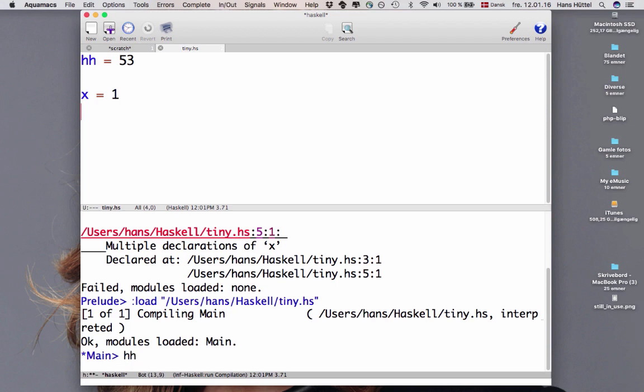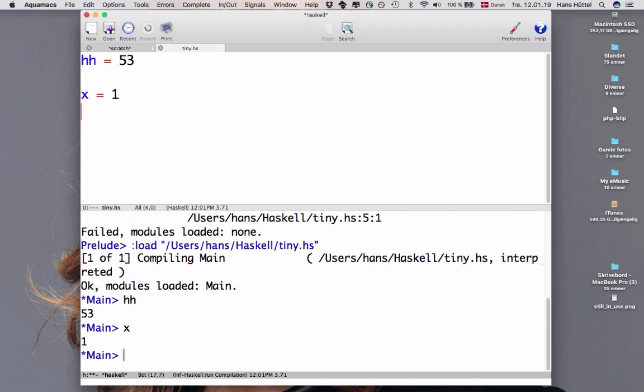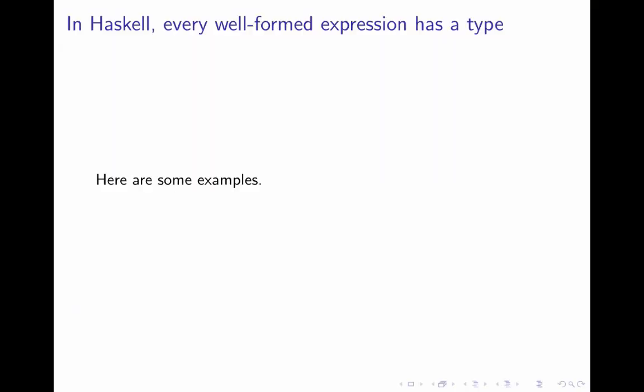What's the value of hh? 53. What's the value of x? It's 1. Well, of course, there's nothing interesting going on just yet, but we'll get around to that in a moment. Now in Haskell, every well-formed expression has a type because Haskell is a typed programming language and let me show you some small examples of that.